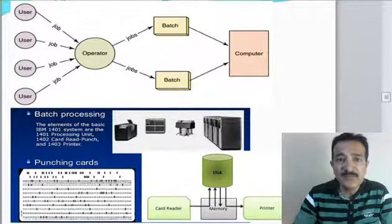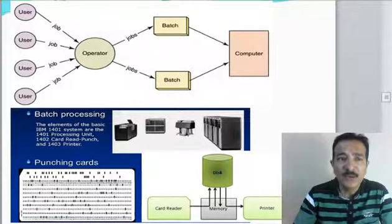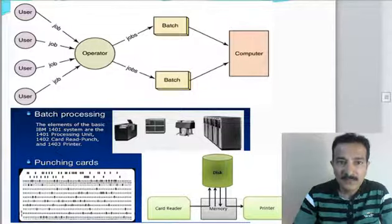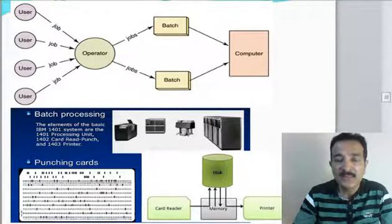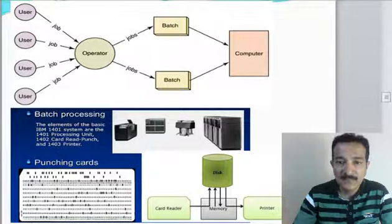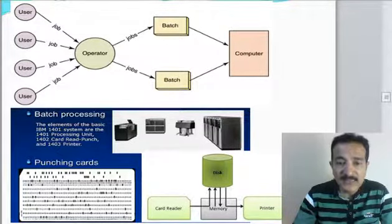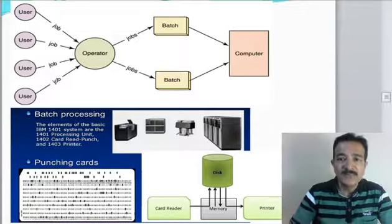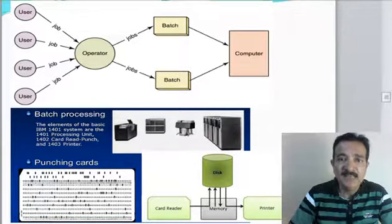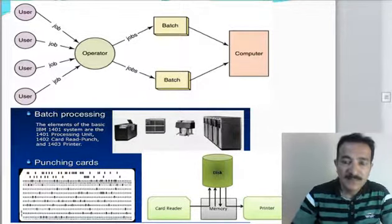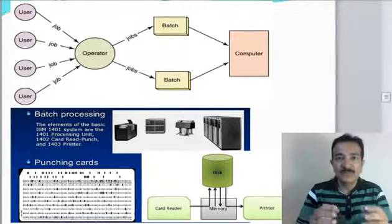In the 1960s, the computer could do only one work at a time. So the batch processing system operates in a strictly one job at a time manner, and within a job it executes the programs one after another. Taking a payroll system as an example, I'll explain how this whole system worked.